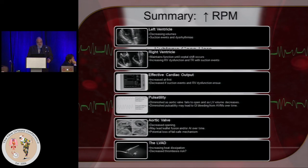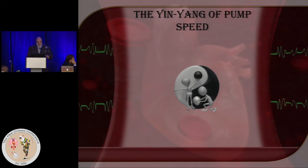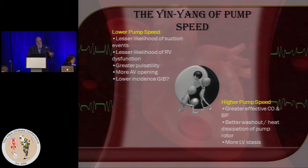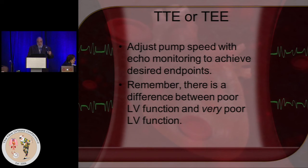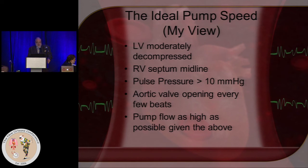So in the end, there's a yin-yang to pump speed — something that exists at too much, something at too little, and we want to go somewhere in between, but what that is remains unclear and is probably highly individualized. When we do adjust pump speed, we want to do it with echo monitoring to achieve the desired endpoints. Remember, there's a difference between poor LV function and very poor LV function — an underlying EF of 20 versus 5 affords you more pulsatility. In my view, the ideal pump speed is one where the LV is moderately decompressed, the RV septum is midline, the pulse pressure is greater than 10, the aortic valve opens every few beats, and the pump flow is as high as possible given those constraints.